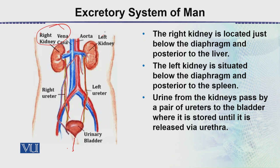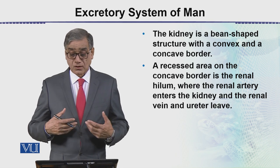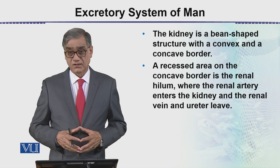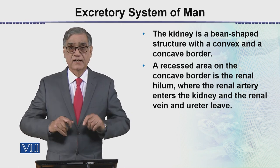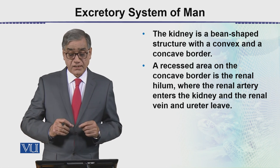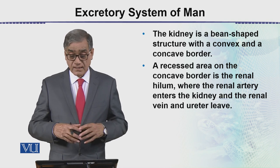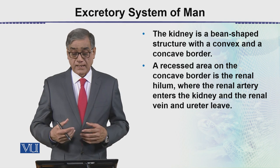This is a summarized form of the excretory system: a pair of kidneys, then ureters, then the urinary bladder. The kidney is a bean-shaped structure with a convex outer border and a concave inner border. The recessed, slightly concave area is called the hilum, where the renal artery enters the kidney and the renal vein and ureters leave the kidney.